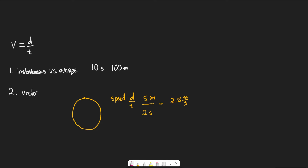With speed, it doesn't matter where we end up — what matters is the physical distance traveled. Whereas with velocity, it actually measures something called displacement, which compares our starting point to our ending point. Velocity is path independent — the path doesn't matter. For example, if we start here and end up 10 meters away but travel 20 meters to get there, our velocity still measures 10 meters divided by the time, but our speed would be the 20 meters. Speed is path dependent.